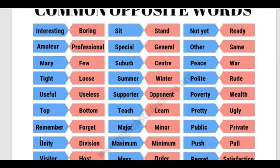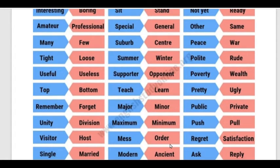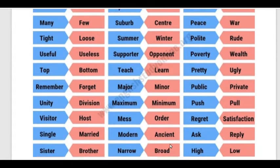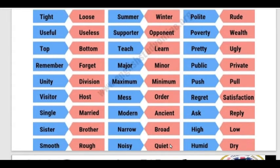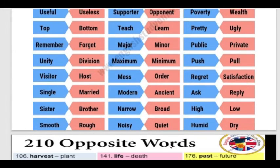Continuing common words: Buddy – Ugly. Remember – Forget. Major – Minor. Public – Private. Unity – Division. Maximum – Minimum. Push – Pull. Regret – Satisfaction. Single – Married. Modern – Ancient. Ask – Reply. Sister – Brother. Narrow – Wide. High – Low. Smooth – Rough. Noisy – Quiet. Humid – Dry.